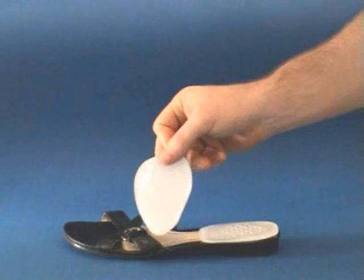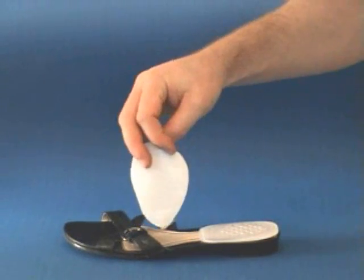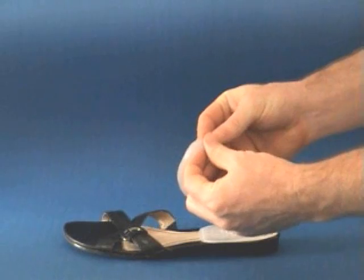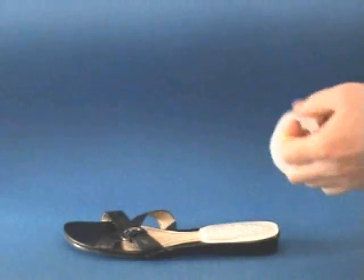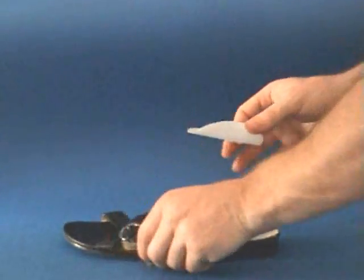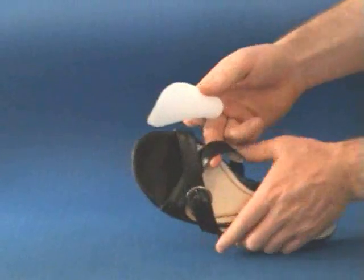The next product we'll have a look at is the DocPods Soft Step. It's very similar to the Heel Cup in that it's a soft gel cushion with an adhesive backing. You simply remove the adhesive backing and place it under the high pressure areas of the forefoot.